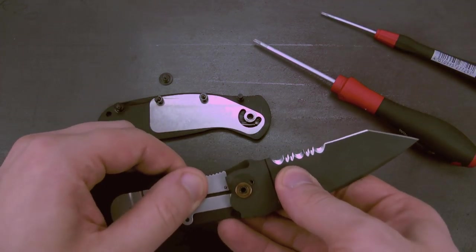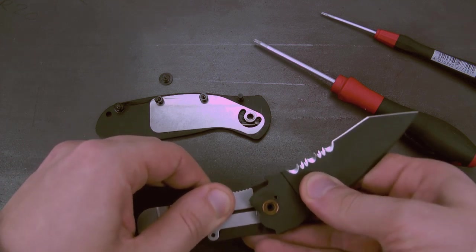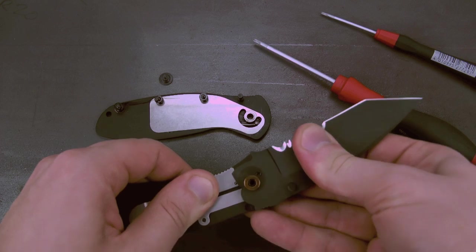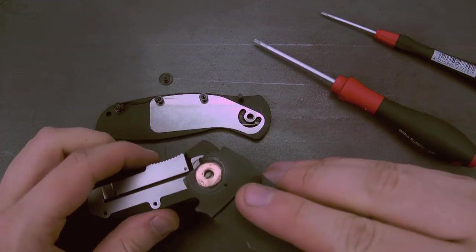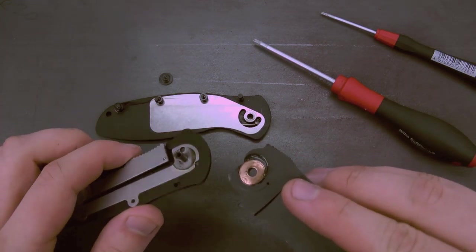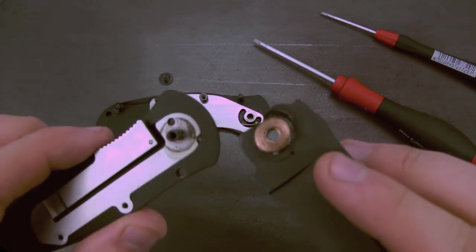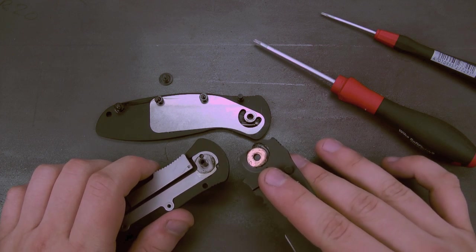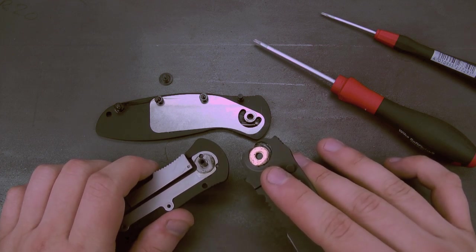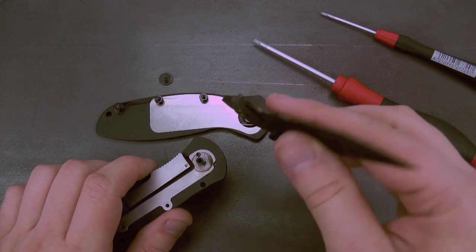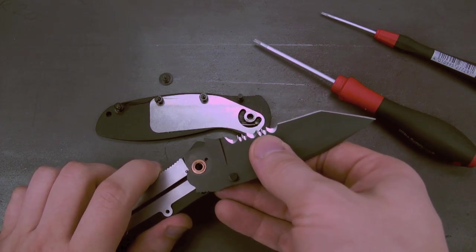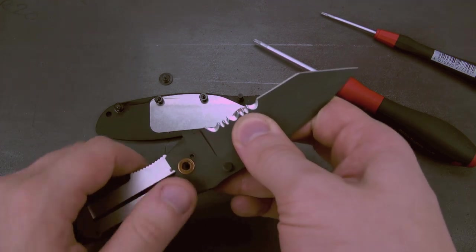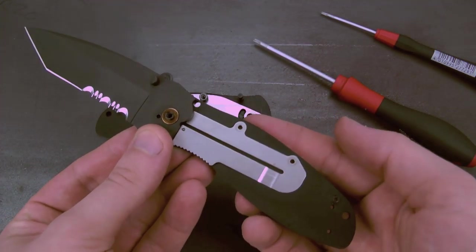This is the phosphor bronze washer or bushing. And that's the hole for the torsion bar nub. Take this off, kind of wiggle it back and forth. There we go. There's the other side. There's the other washer. You can see that there's some grease in there. If your knife is yucky, again, please clean out all of the gunk that's in there. All the dust and fuzz and whatever's in there. And then re-lubricate the pivot with your lubricant of choice.